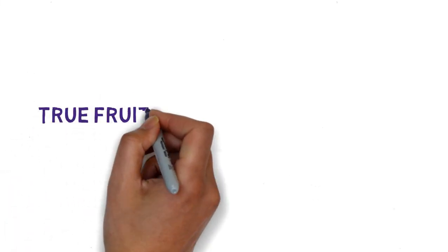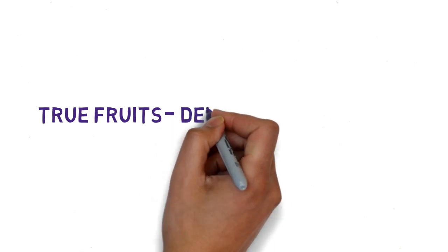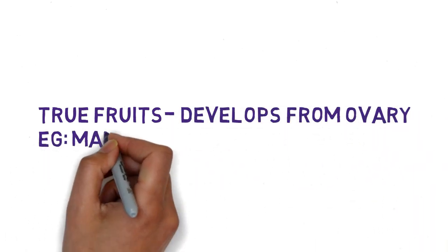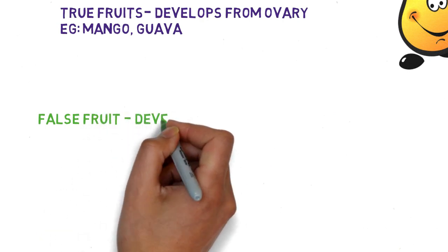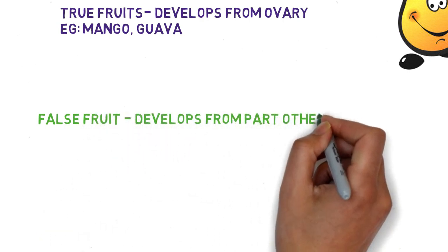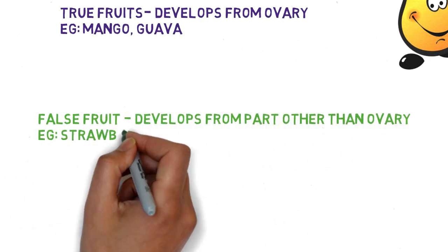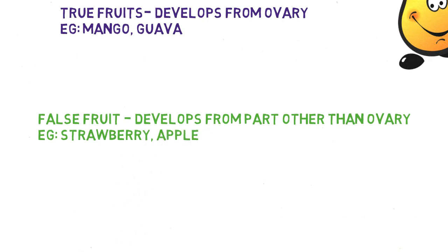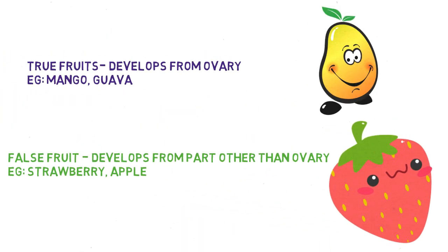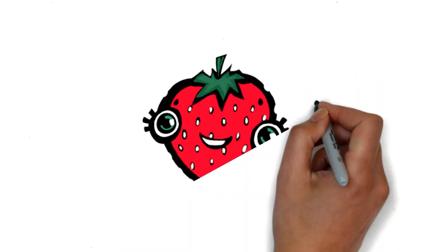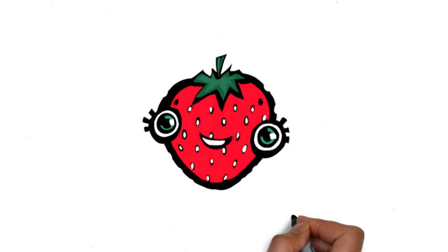There are two types of fruits: true fruits and false fruits. True fruits are those which develop directly from the ovary — for example, mango and guava. False fruits are those which develop from any other part other than the ovary — for example, strawberry, apple, etc. Let us understand the interesting development of the strawberry fruit.